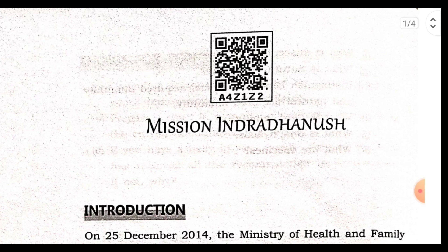The name of the chapter is Mission Indradhanush. 'Mission' means the aim — something we want to achieve. 'Indradhanush' means the rainbow. There are seven colors in a rainbow — the mnemonic VIBGYOR stands for Violet, Indigo, Blue, Green, Yellow, Orange, and Red.